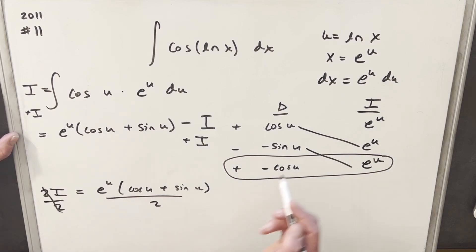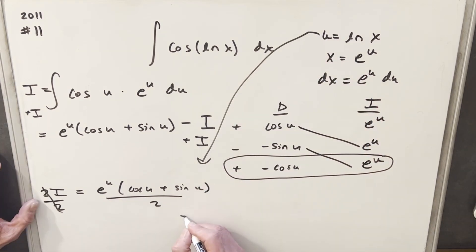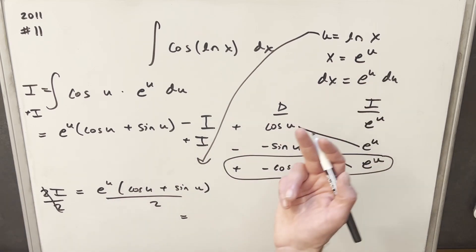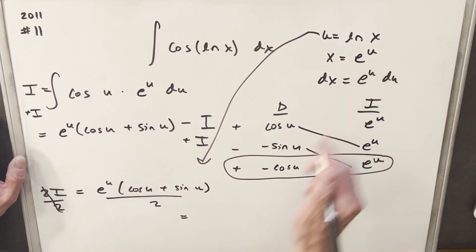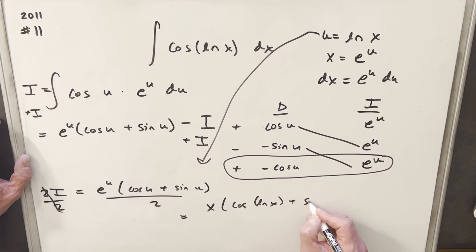And all we need to do is just need to back substitute. We have our u value, and let's just bring it back in here. So rewriting our final solution, e to the ln x is the same thing as x, or we have this e to the u value right here. So up front, we're going to have an x. Then in the parentheses, we're going to have cosine u, which is ln x, plus sine ln x, all over 2, plus c.